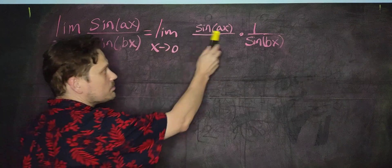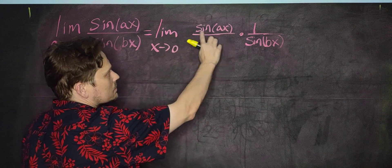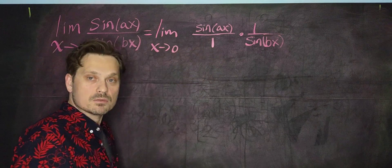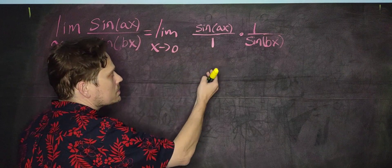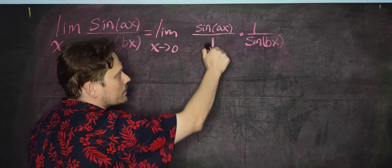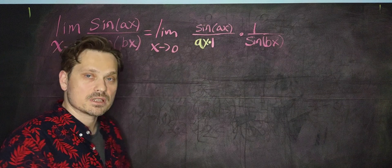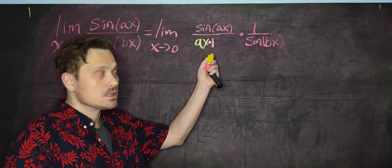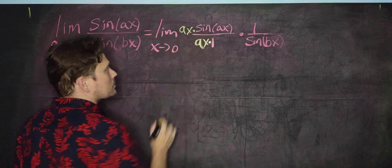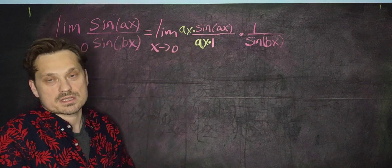There's a well-known limit that says the limit as x approaches 0 of sine of ax over ax equals 1. The issue is we don't have ax on the bottom to match — we have a 1. So we can introduce ax by writing ax times 1, but I cannot just arbitrarily multiply by ax without doing the same on top. So I place ax on top as well. This is allowed because ax divided by ax is just 1, so you're not really changing anything.